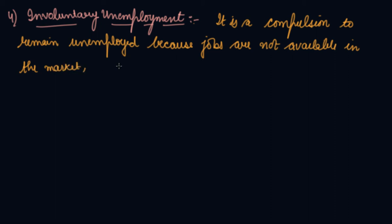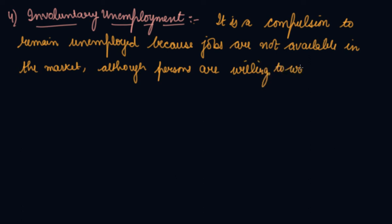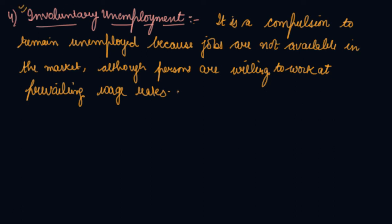In involuntary unemployment, although persons are willing to work at the prevailing wage rates, the jobs are simply not available. So it is considered in the estimation of total unemployment in the economy — you include involuntary unemployment when calculating total unemployment. I hope you have understood the types of unemployment. Download the Scholars Learning App and enjoy the learning experience with us.